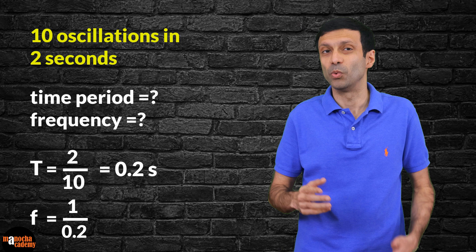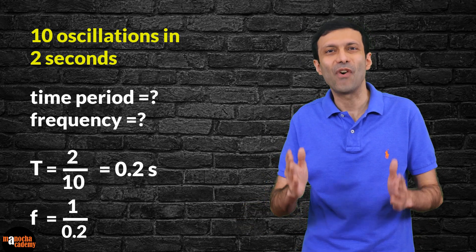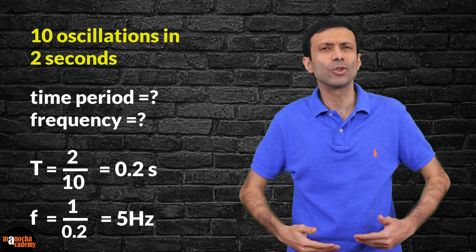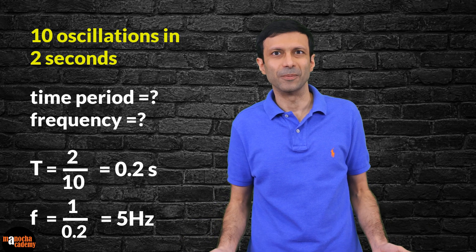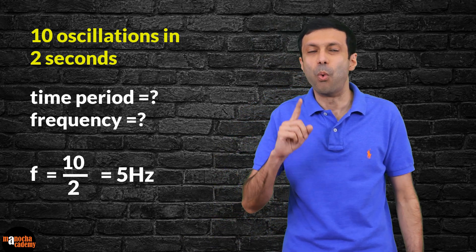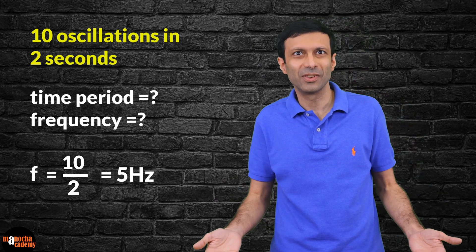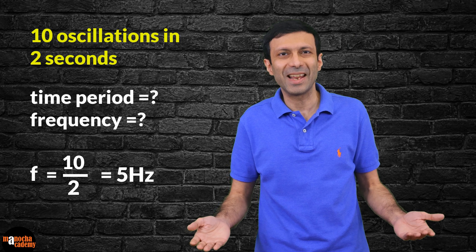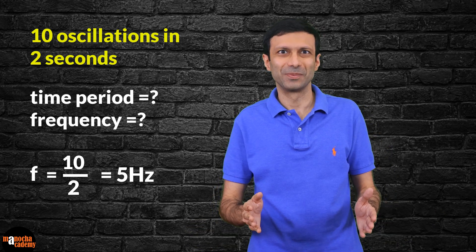Frequency, as we learned, is the reciprocal of the time period, so the frequency is going to be 1 divided by 0.2, which if you calculate is 5 hertz. You can also directly calculate the frequency: in 2 seconds there are 10 oscillations, so in one second the number of oscillations is 10 by 2, which is 5. So the frequency once again is 5 hertz.